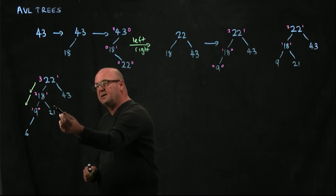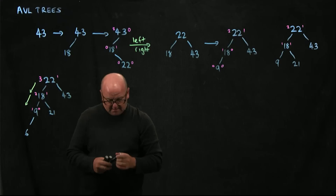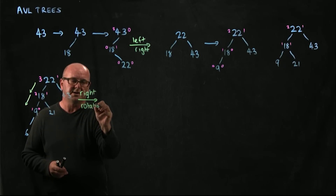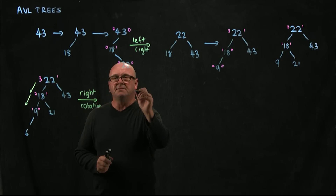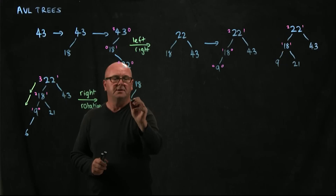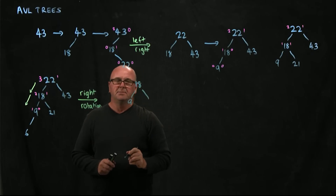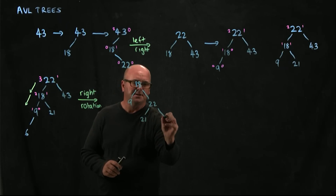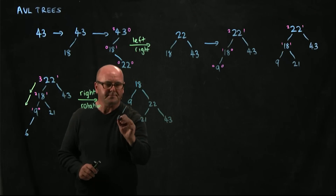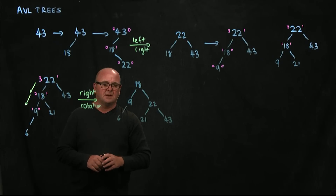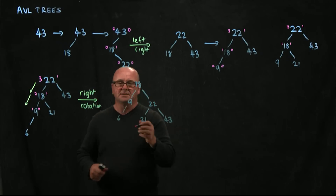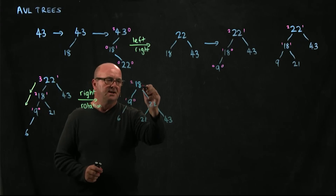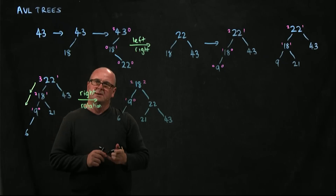The right rotation brings 22 down around 18. We end up with 22 as the right child of 18. The 21 becomes 22's new left child, and 43 is the right child. The 6 is the left child of 9 where it should be. Is this tree balanced? On 9 we've got 1 and 0. On 18 we've got height 2 on either path, so we've got a balanced tree.